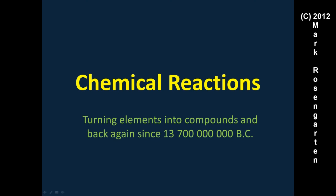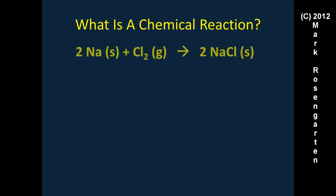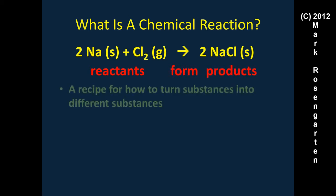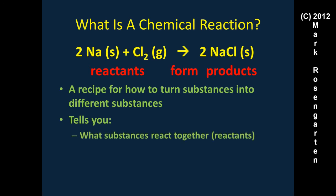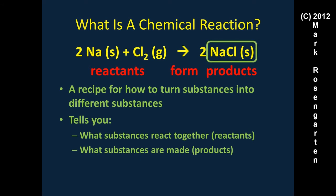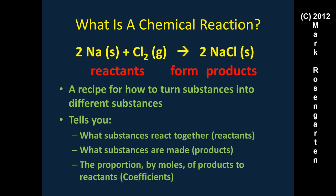Chemical reactions have been turning elements into compounds and back again since 13.7 billion years ago. Here's an example: two sodiums and a diatomic chlorine form two sodium chlorides. The stuff you react is called the reactants; the stuff you form is called the products. A chemical reaction is a recipe for how to turn substances into different substances — it tells you what substances react together and what substances are made.